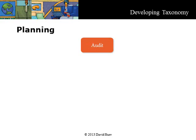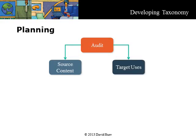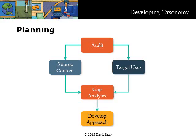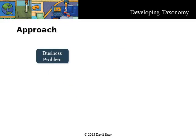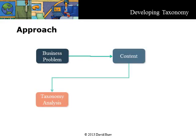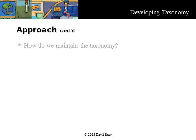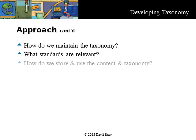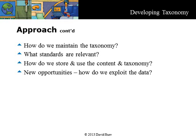When the team is in place and the scope has been defined, the main plan is to do an audit to inventory source content and identify the target products or uses. There will be a gap between the classification required for the source and its targets. Identifying and understanding this gap will give the insight necessary to develop an approach to the taxonomy and subsequently a metadata model. To determine our approach we need to define the business problem we are trying to solve and answer the questions: what content is relevant to this problem and what information do we need about that content. This will help us make the decision to build or buy the taxonomy. As we think through the approach we should consider how we will maintain the taxonomy and what standards are relevant. Ultimately the storage system will have a big impact on the usability and effectiveness of the taxonomy.